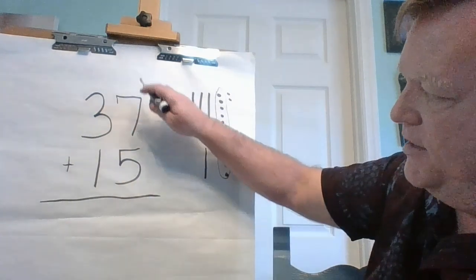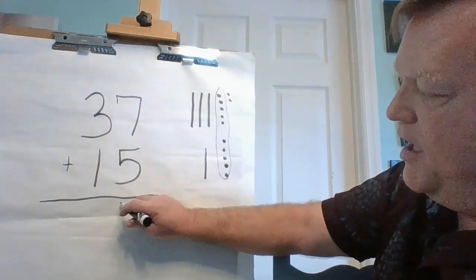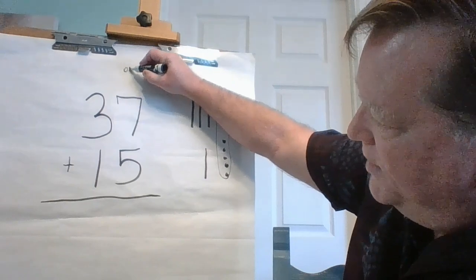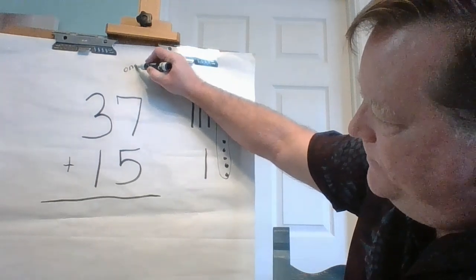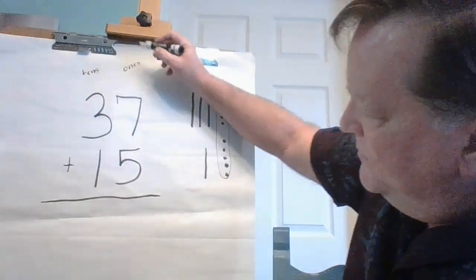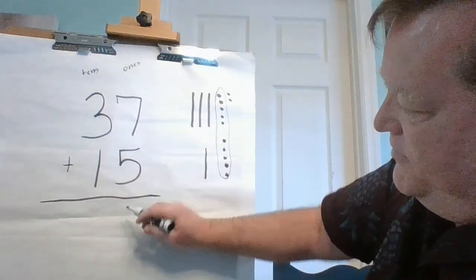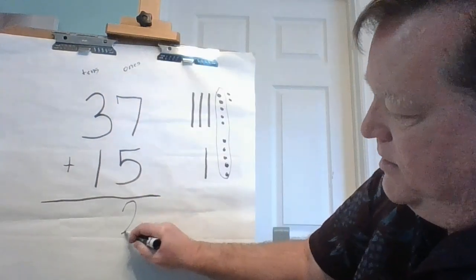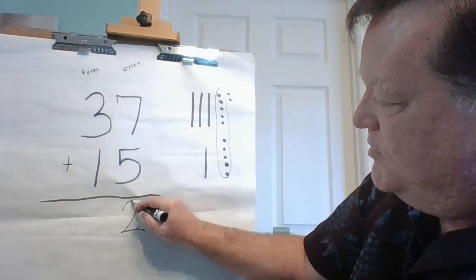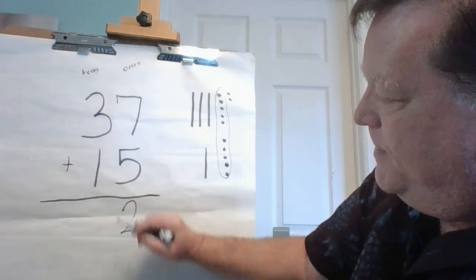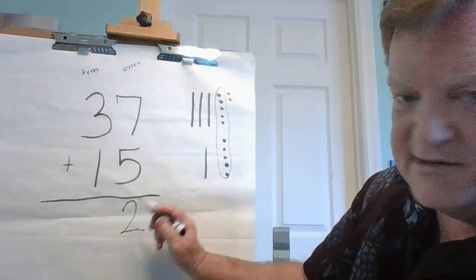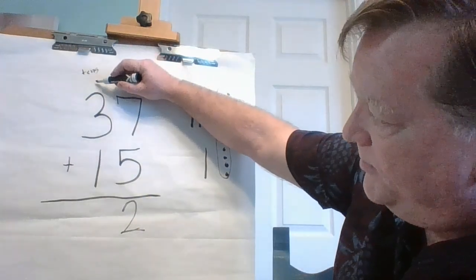On my problem, seven plus five is twelve. I'm going to put the two in the ones column because it's two ones. And then the ten is going to go up with its friends, the other tens, so I'm going to put it up here.